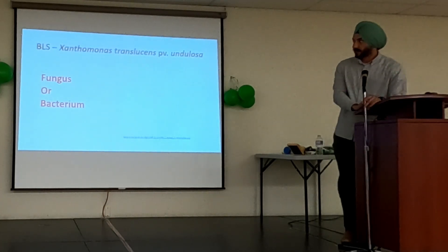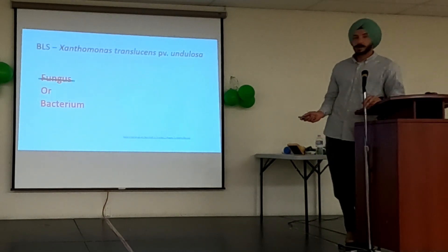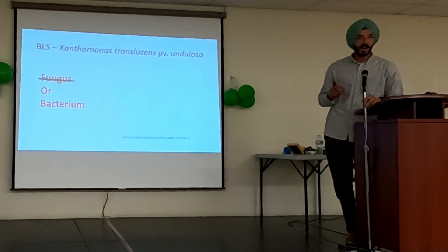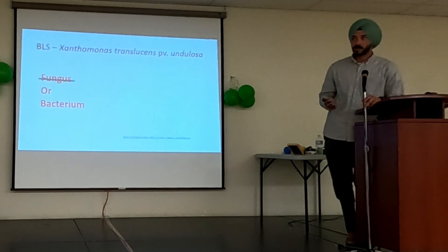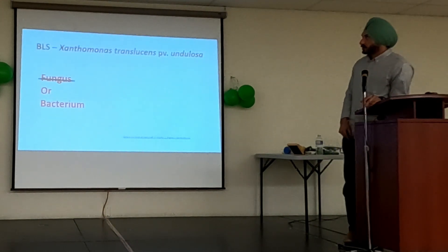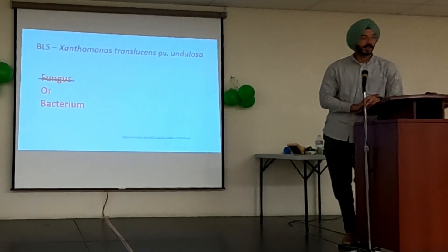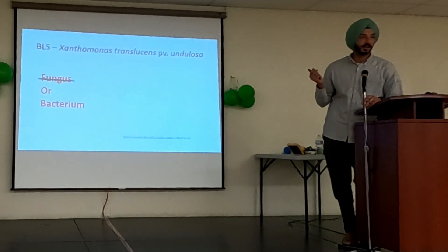The first important thing about bacterial leaf streak is that it's not a fungus — it's a bacterium. The fusarium head blight we discussed earlier was a fungal disease; this is caused by bacteria, and that's a big difference in how you plan management. It's caused by Xanthomonas translucens pathovar undulosa — the pathovar which can cause disease on both wheat and barley. There are seven or eight pathovars confirmed in Canada, each associated with different cereal crops, but this one affects both wheat and barley.